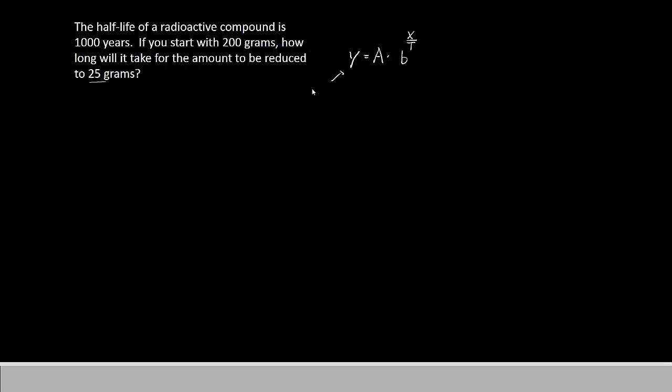The y is the amount that is left over. The a is the initial amount that you started with. The b is the base. The t is the half-life itself. And the x is the amount of time that is passed. Alright, so that's what they all mean.